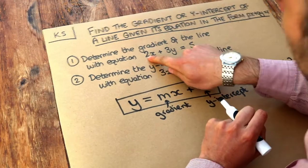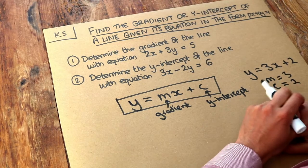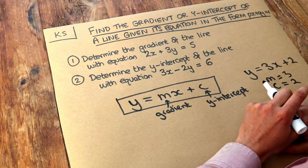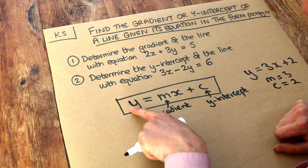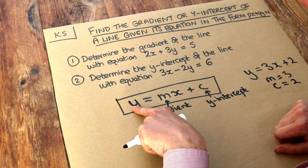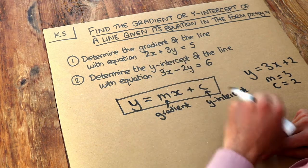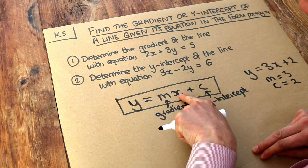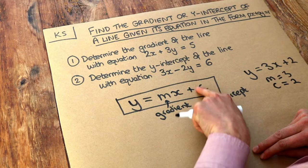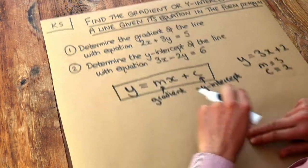The problem here is that this is not in the form y equals mx plus c. So all we need to do is make y the subject, because in this equation y is on its own on one side. If we could do the same with these equations, we could read off the number in front of x to get the gradient and the constant term, the number without the x, as the y-intercept.